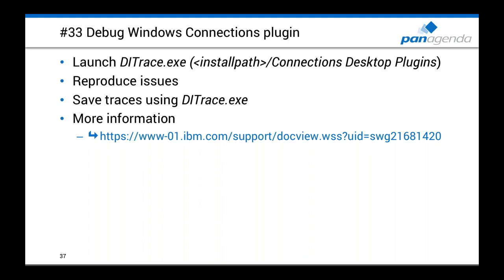Tip 33: Windows plugins for Connections. If you have issues with Windows plugins (Explorer integration or synchronization) and want to debug them, there is an application called 'ditrace' included in every installation. Start it, reproduce the issue, then export or save the traces using the application. You can review them yourself or send them to IBM or your business partner.